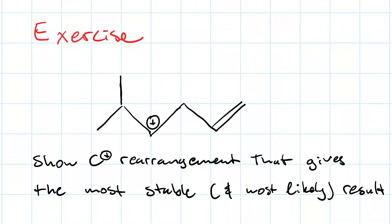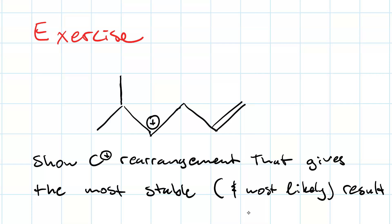Here's an exercise for you to try. I've got this carbocation, and I want you to draw the curved arrows and show the carbocation rearrangement that gives you the most stable — and therefore most likely — carbocation. Pause your video, work the problem, then resume to see the answer.